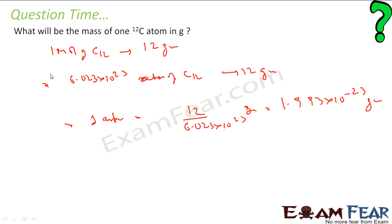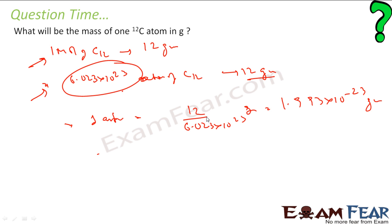Very easy. 1 mole of C-12 equals 12 grams, 1 mole contains 6.023 × 10²³ atoms, so these many atoms equal 12 grams, and 1 atom equals 12 divided by 6.023 × 10²³ grams. That is the mass.